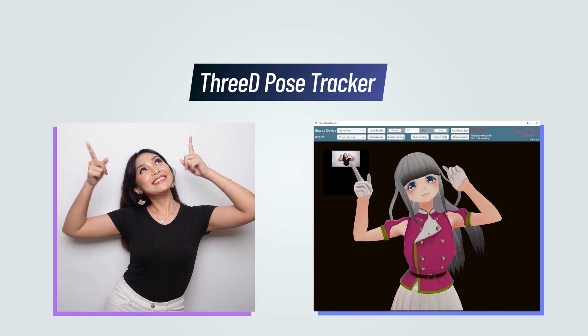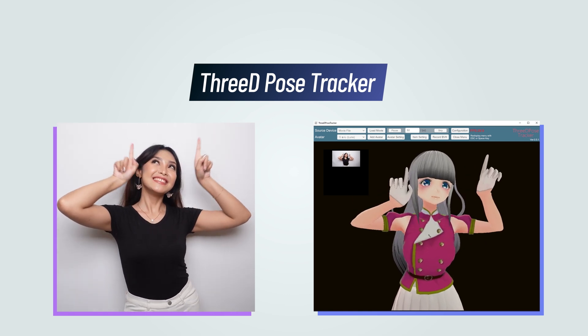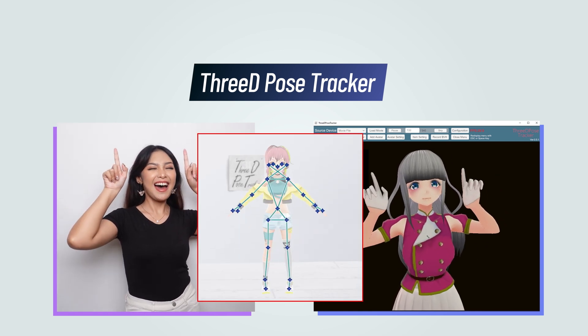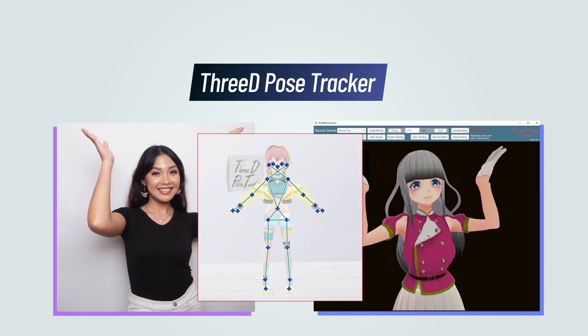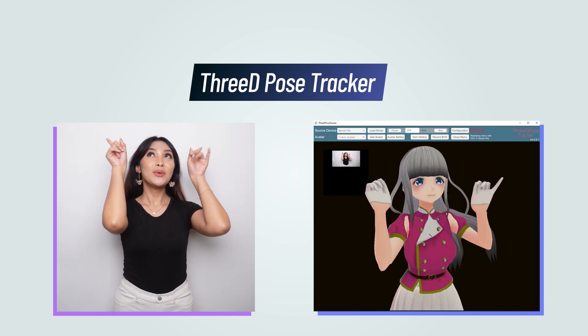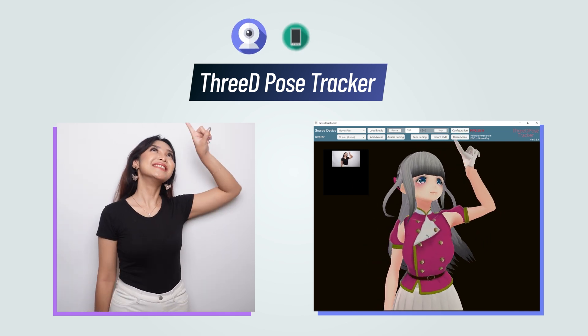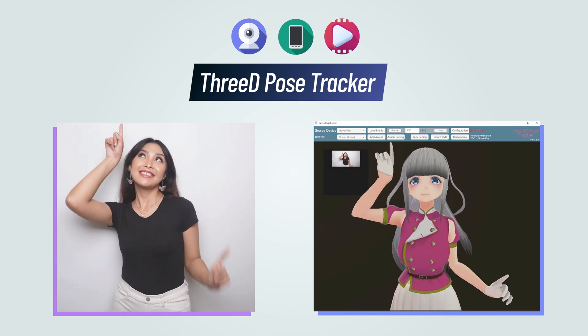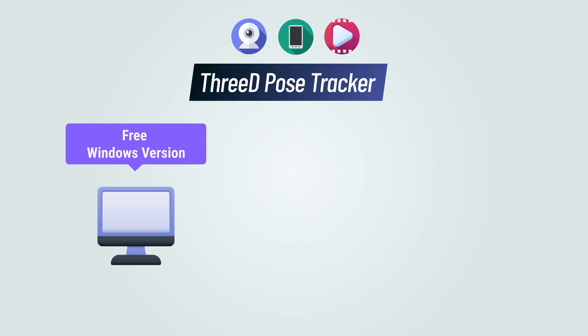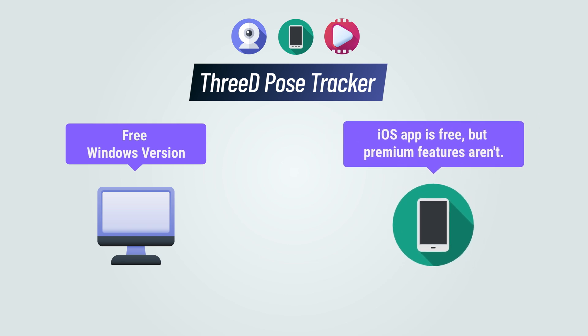3D Post Tracker is a real-time motion capture program that can track 24 detection points on the human body. It uses AI image recognition technology based on deep learning to analyze data from a USB webcam, iPhone camera, or a PC card video. There are two versions of the program available: a completely free version for Windows users, and an iPhone version which can be downloaded from the App Store.